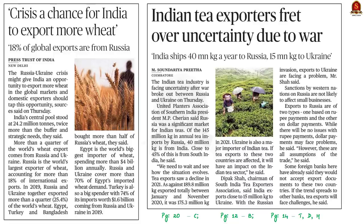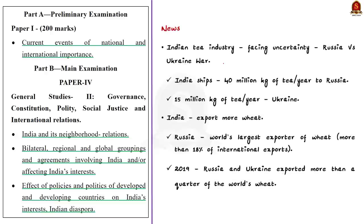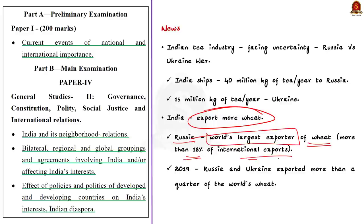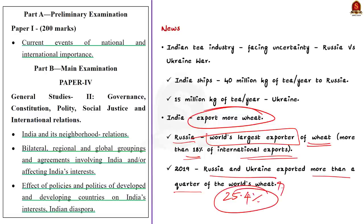This article says the Indian tea industry is facing uncertainty because of the war between Russia and Ukraine. India ships 40 million kg of tea per year to Russia and 15 million kg to Ukraine. In contrast, the second article states India will be able to export more wheat as a result of this crisis. More than a quarter of the world's wheat exports come from Russia and Ukraine. Russia is the world's largest wheat exporter, accounting for more than 18% of international exports. In 2019, Russia and Ukraine together exported 25.4% of the world's wheat. This Russia-Ukraine crisis may give India an opportunity to export more wheat in global markets.